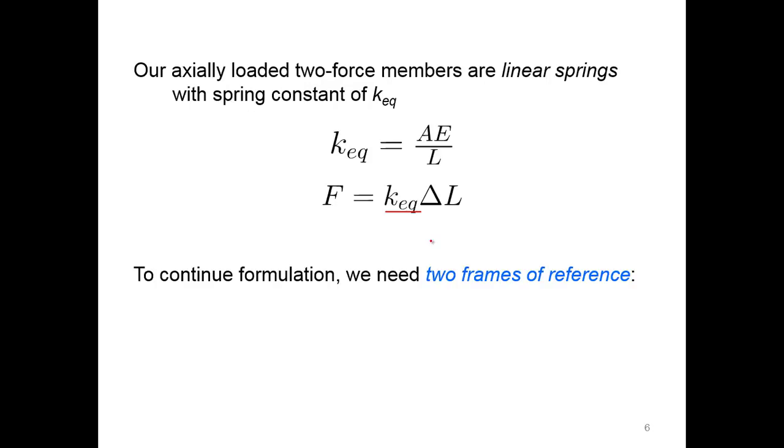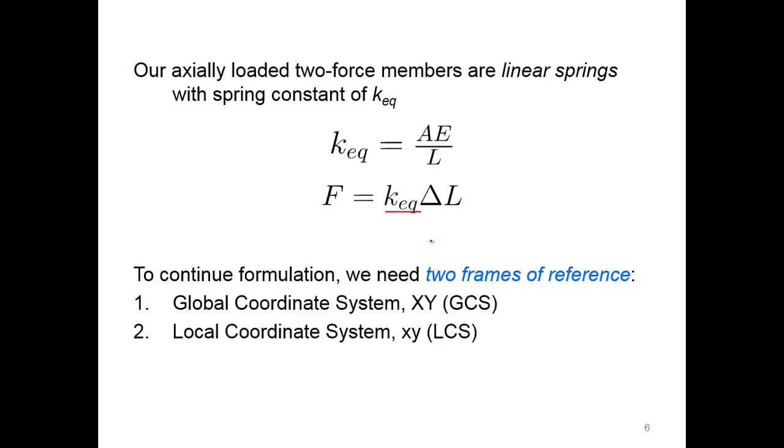To continue this formulation, we need two frames of reference because we're doing stuff within the member, but then we also have to relate the member to the overall truss or frame that exists. We're going to have a global coordinate system, which is how we look at the overall structure of all the members, and a local coordinate system for just one member. This is a pretty key relationship between these two as we move forward.